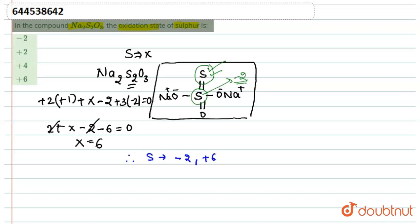Therefore sulfur has two oxidation states here: minus 2 and plus 6. Minus 2 of the central atom and plus 6 of this peripheral sulfur atom. So the answer would be plus 6. Thank you.